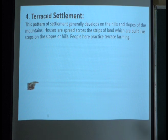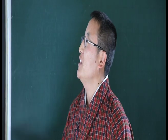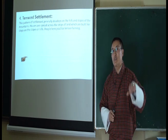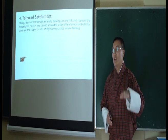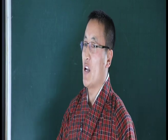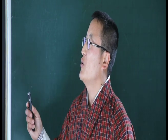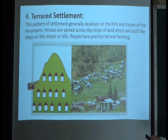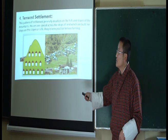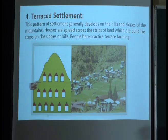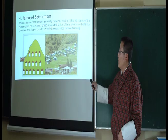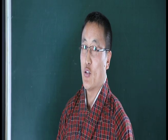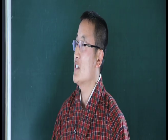The fourth pattern is terrace settlement, which generally develops on the hills and slopes of mountains. It is formed just like steps — houses are spread across strips of land built like steps on the slopes of hills, where people also practice terrace farming. In the picture you can see houses built at different levels going down a mountain, like a staircase — first step, second step, third step — and this is called terrace settlement.